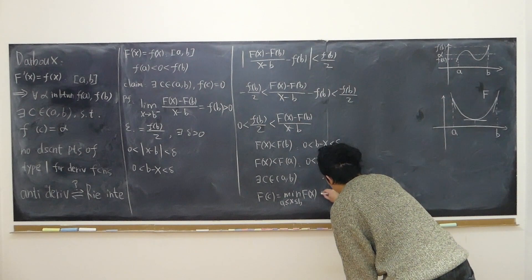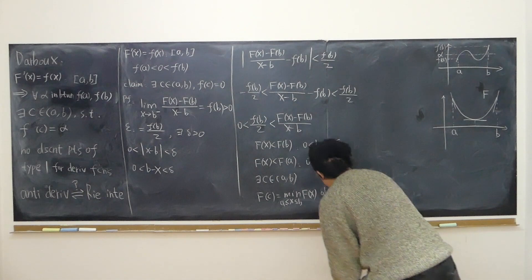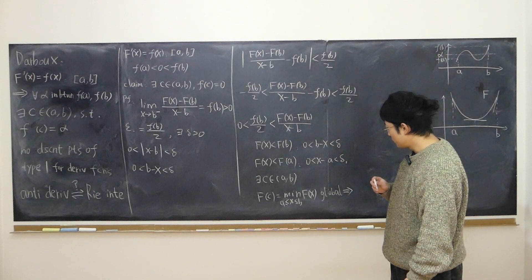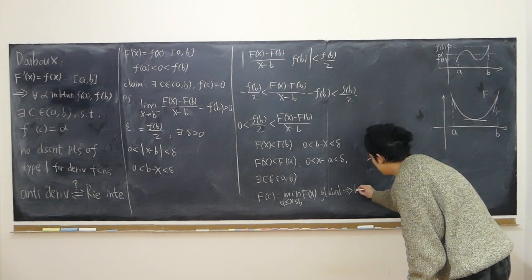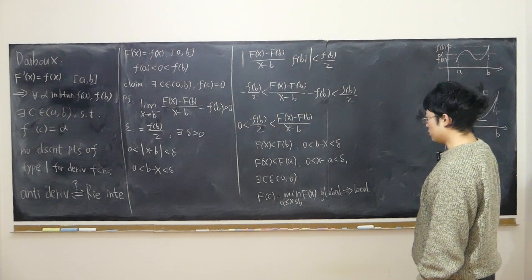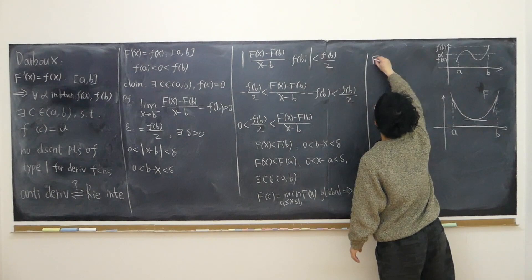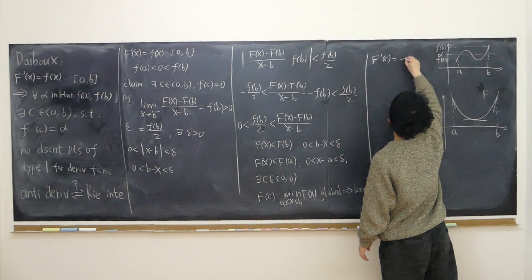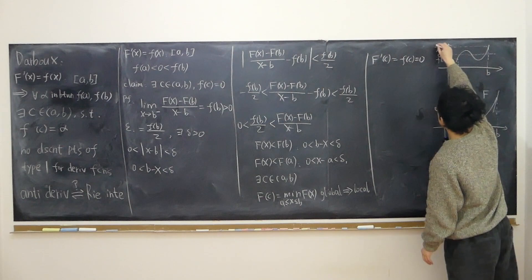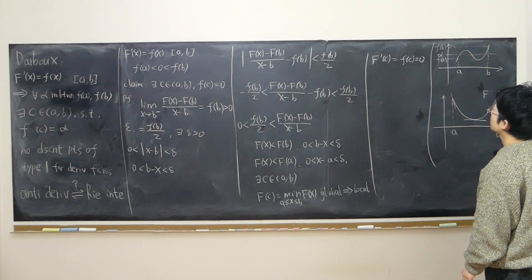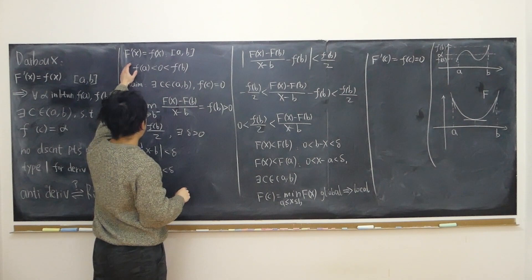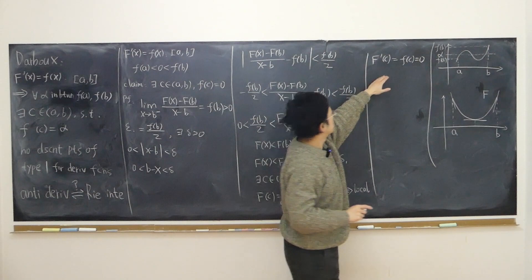This is not just a local minimum but a global minimum. Note that local minimum doesn't necessarily imply global minimum, but global minimum definitely implies local minimum. And because capital F is derivatable, the derivative at point c — denoted as little f(c) — has to equal zero. So I've proven the special case.